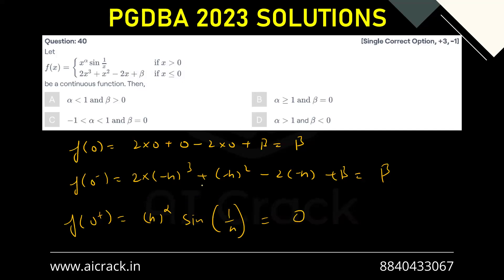If this is 0 then to make the function continuous these two have to be 0 only. So beta equals 0. Now we have to choose either of b or c.